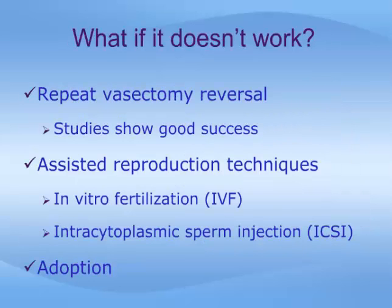You may be concerned about what to do in the case of an unsuccessful reversal. In this case, your doctor might discuss several options with you, including a repeat reversal, assisted reproduction techniques, and adoption. Repeat reversals can be successful, and some studies show only a slight reduction in the patency and pregnancy rates in these situations. The most common assisted reproduction techniques to explore include in vitro fertilization, or IVF, and intracytoplasmic sperm injection, or ICSI. Finally, adoption is a consideration for some couples.